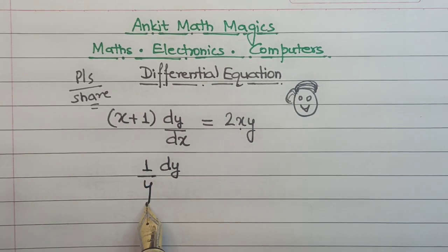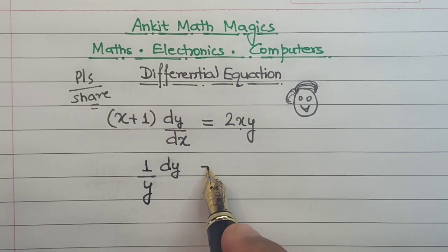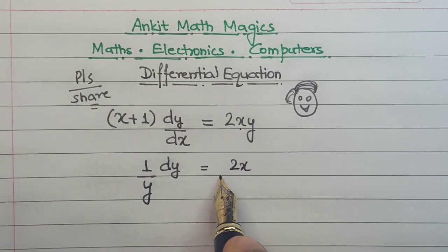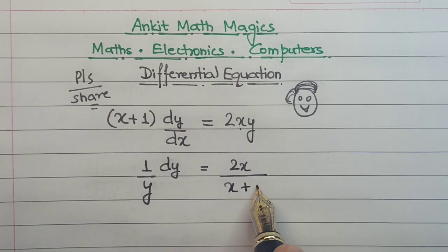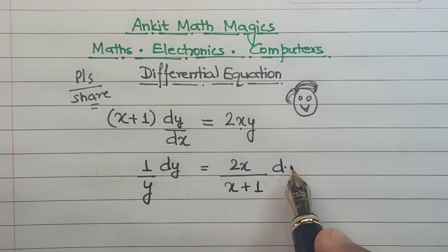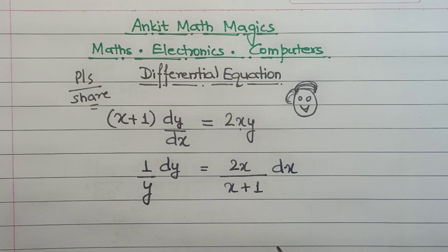This y on this side comes to the LHS and becomes 1/y. Similarly in the right hand side we have 2x/(x+1), and dx gets cross multiplied on this side.